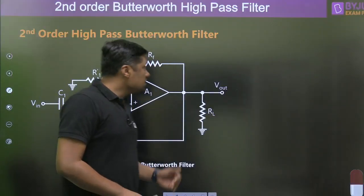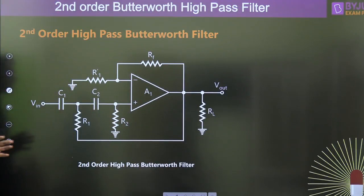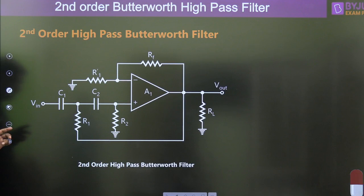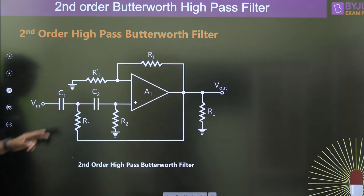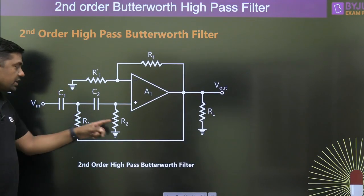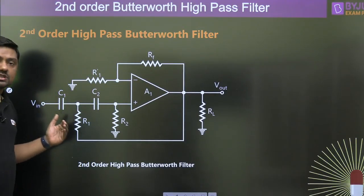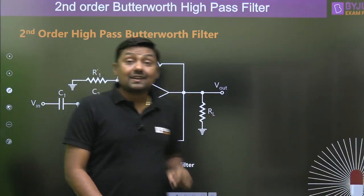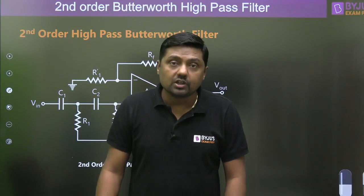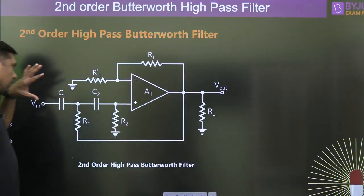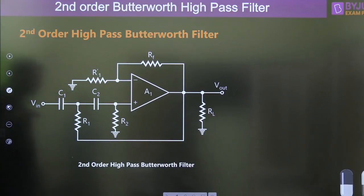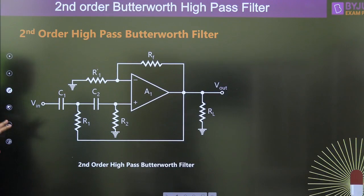Now, what is the second order high pass Butterworth filter? Watch this diagram — here we are using two capacitors, two resistors R1 and R2, and Rf and R1'. This resistor is used to increase the gain of the system. Here we are using one active element, the operational amplifier, which is why this filter is an active filter. But before discussing this, I will explain the passive filter, first order Butterworth filter, and then the second order Butterworth filter.